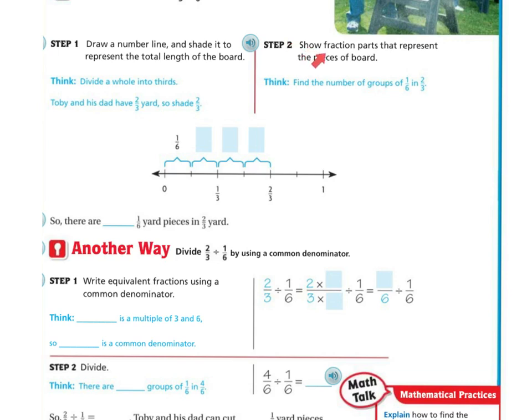Step two is show a fraction that represents the parts or pieces of the board, which was one sixth. So we have one sixth and then we've got one sixth, one sixth, and one sixth. So there would be four one sixth yard pieces in two thirds. So again here's one third and two thirds, and then I divided them up into sixths. One, two, three, four. So there are four one sixths in two thirds yard.